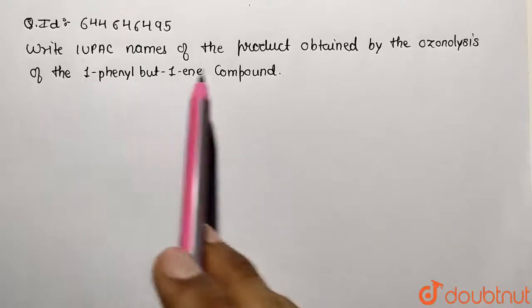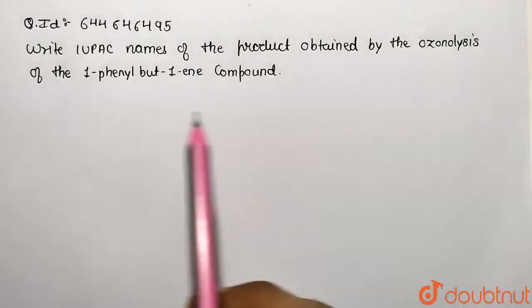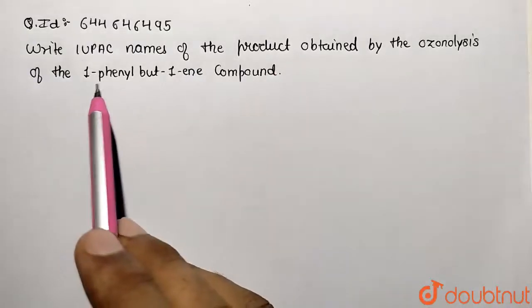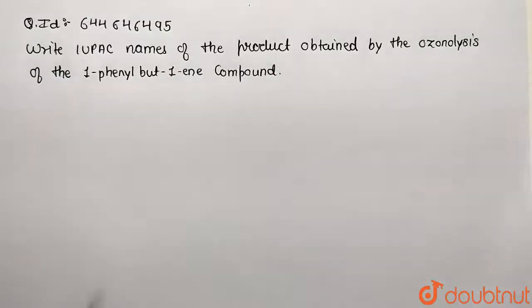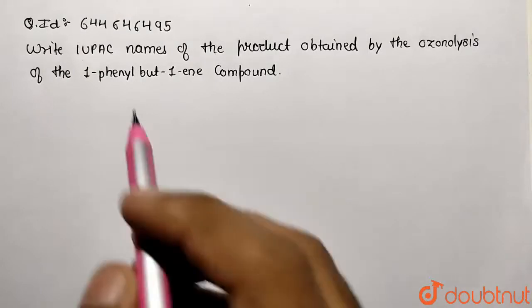We need to write the IUPAC name of the product that is being obtained by the ozonolysis of 1-phenyl-but-1-ene compound. So this is the given compound. Basically, first draw the structure that they are calling.